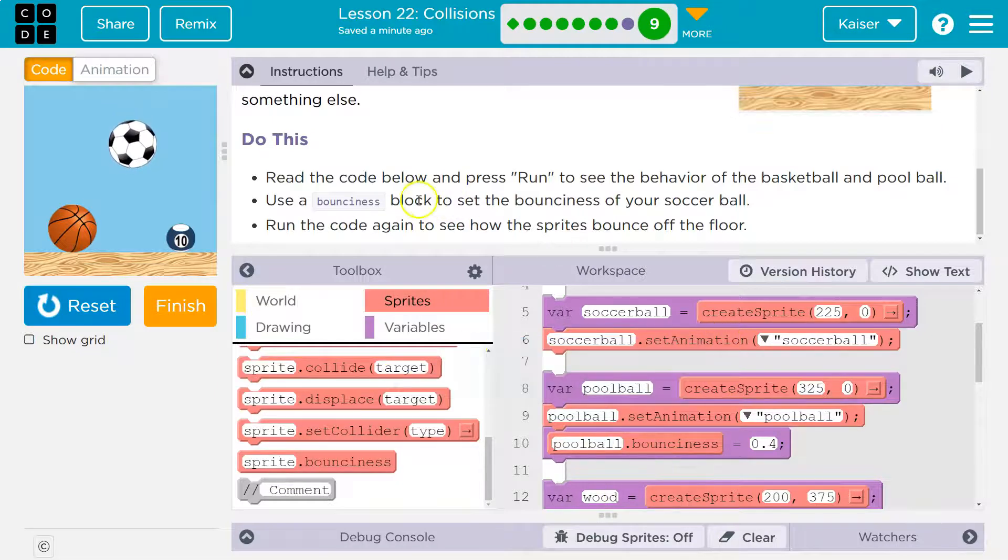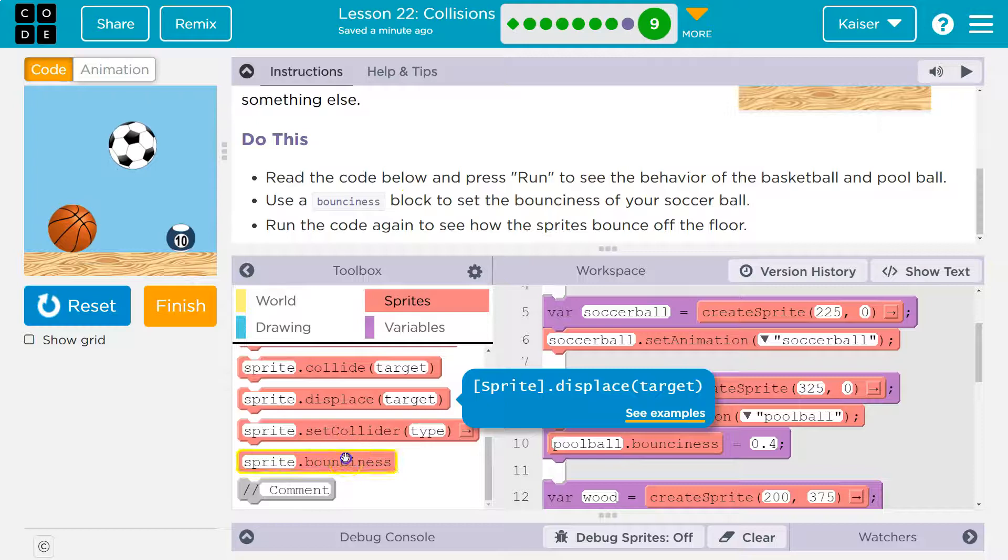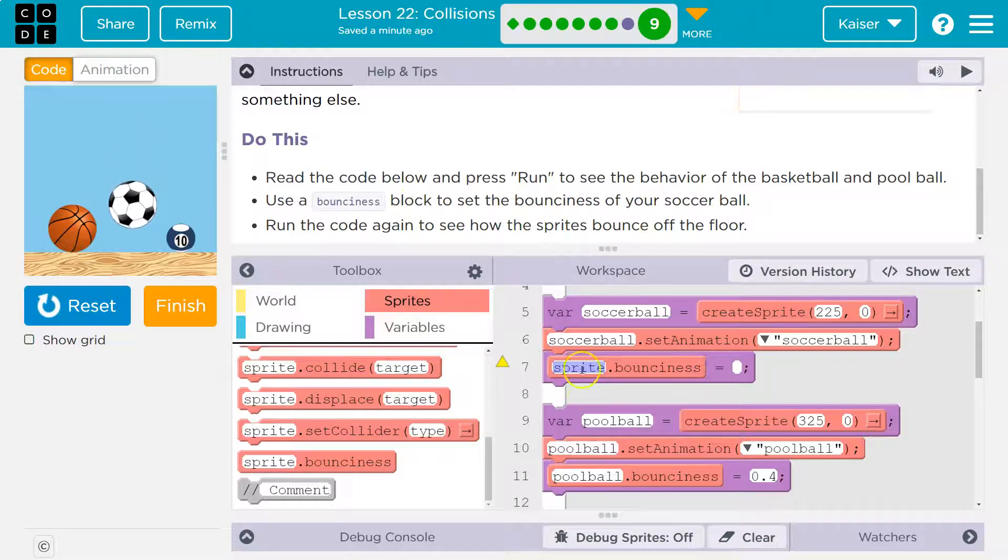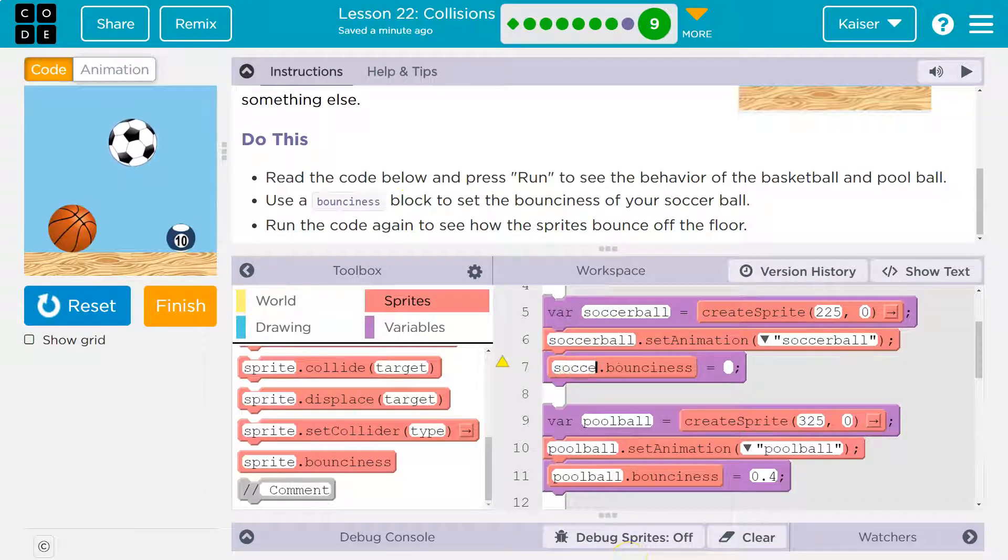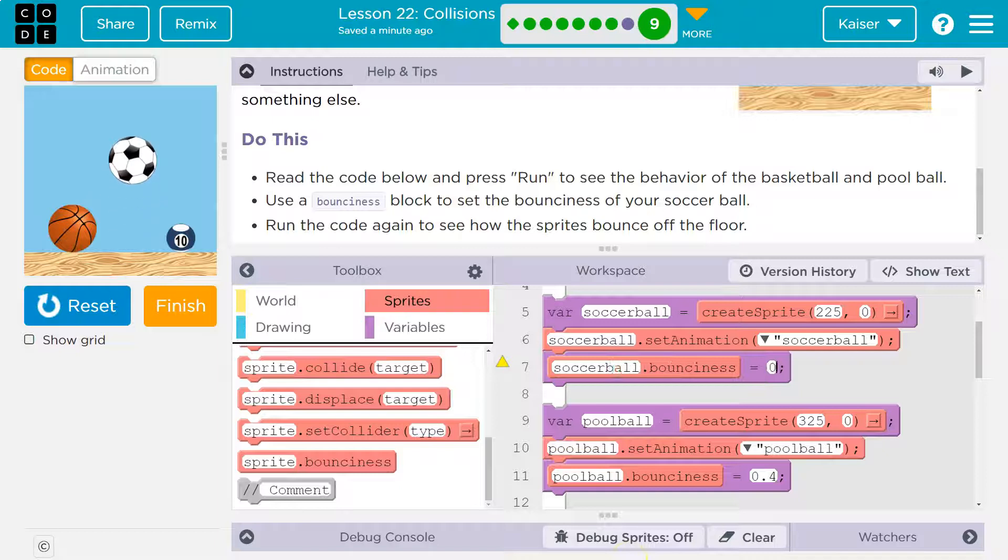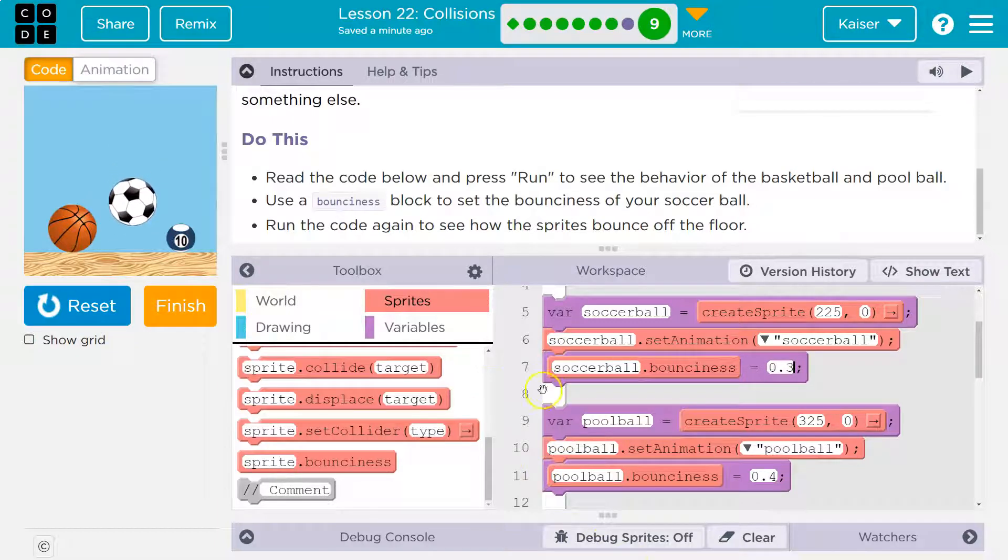So use bounciness - let's do that. Boom, soccer ball. We have a soccer ball here and I'm gonna go to 0.3. I have no idea. Run the code again to see how it bounces off the floor.